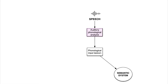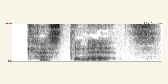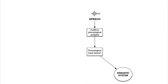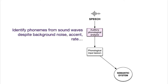What auditory phonological analysis does is take the signal and find out what phonemes are in it. Similar to the way you might have done in your course — given a spectrogram and expected to pick out what the phonemes are, where they start and end, and what sequence they're in. This can be very difficult to do visually even on clean samples, but our brain can rapidly do this in the presence of background noise. That's what this little box does.